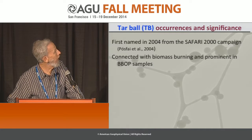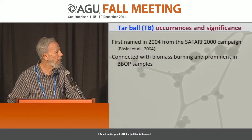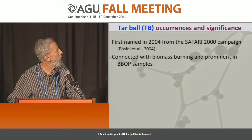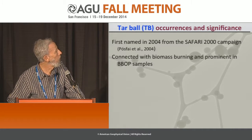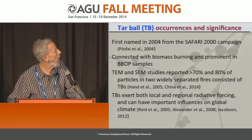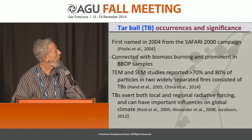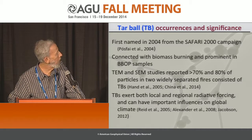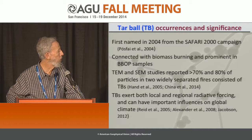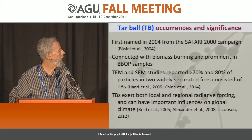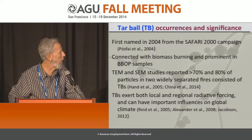They were first named when we saw them in Safari — our first photos were in 2003, but we identified them as a distinct particle type in 2004. They're prominent in Bebop. Prior studies showed that in some cases between 70 and 80% of the particles in these fires consisted of tarballs, and it's been pointed out that they have important climate implications.